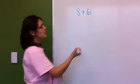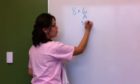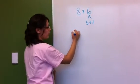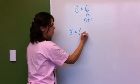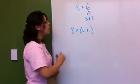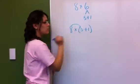With 8 times 6, we are going to split up the 6 into 5 plus 1. So therefore we have 8 times 5 plus 1. We will distribute the 8 into the 5, and then the 8 into the 1.